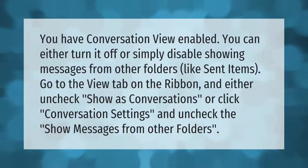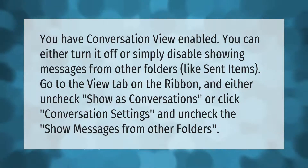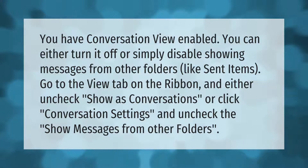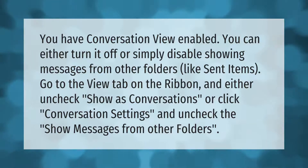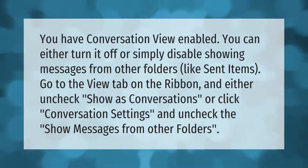If you have conversation view enabled, you can either turn it off or simply disable showing messages from other folders like sent items. Go to the View tab on the ribbon and either uncheck 'Show as Conversations,' or click 'Conversation Settings' and uncheck 'Show messages from other folders.'